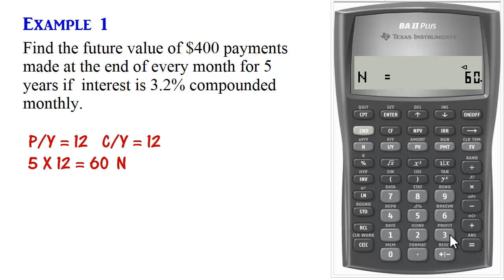Interest rate is 3.2. We press 3.2, I/Y. And then present value. We don't have present value. We just have month end payments. So we'll do 0, present value.